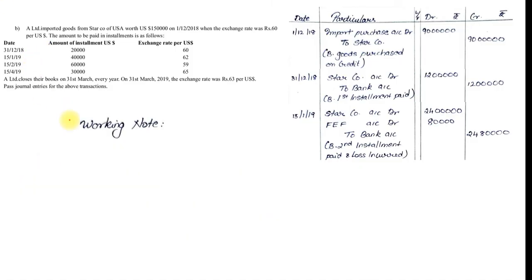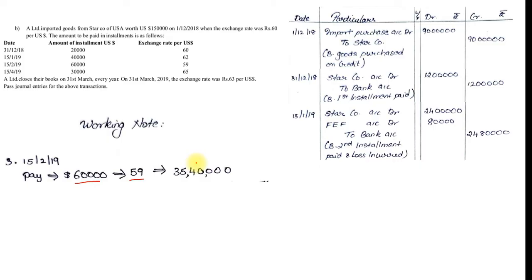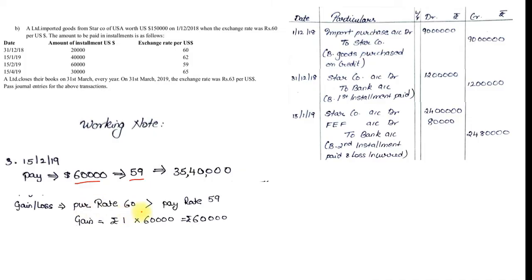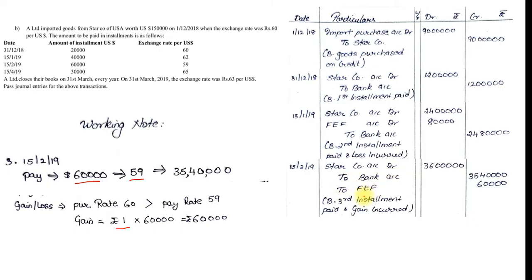Third installment: 15th February, $60,000 at the rate of ₹59. Multiply: ₹35,40,000. Check gain or loss — purchased at 60, paying at 59, so we are gaining ₹1 per dollar: 1 × 60,000 = ₹60,000 gain. Gain means FEF is on the credit side. Entry: Star Company Account Debit to Bank and to FEF. Bank = ₹35,40,000; FEF gain = ₹60,000; so Star Company = ₹36,00,000. Being third installment paid and gain made.